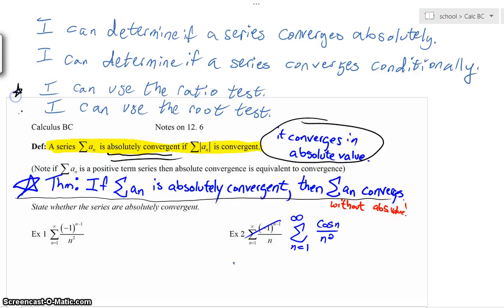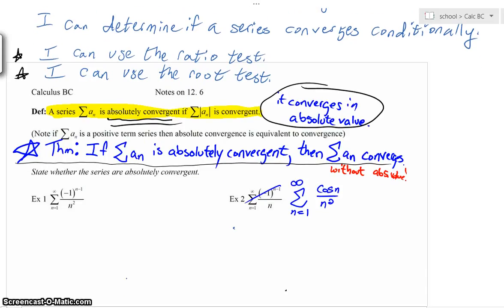And then two incredibly helpful tests: the ratio test, which is used extensively - it's the most often used test you're ever going to see - and then the root test, which is very similar to it.